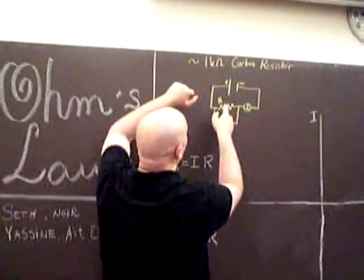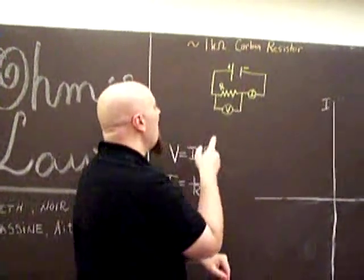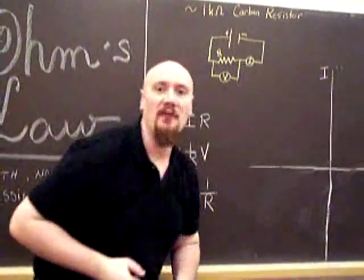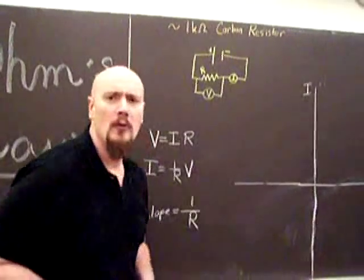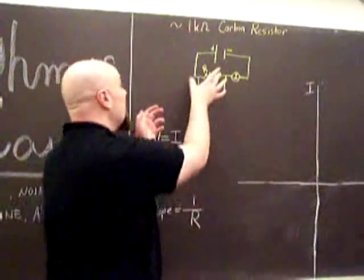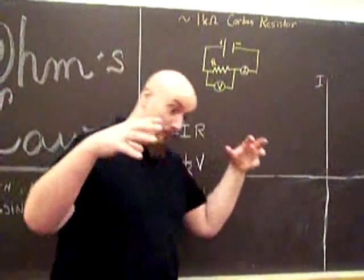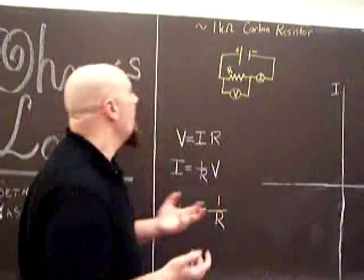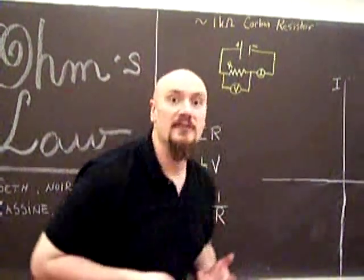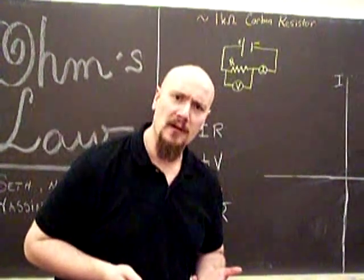We're going to take a carbon resistor, and we're going to set a series of voltages through it, and then we're going to measure the corresponding currents that go through. And then we're going to take the same resistor and we're going to submerge it in liquid nitrogen. And then we're going to do the same thing. Set a series of voltages and measure the corresponding currents.